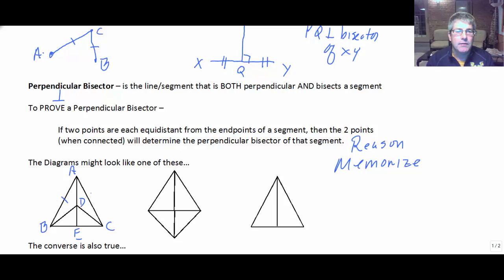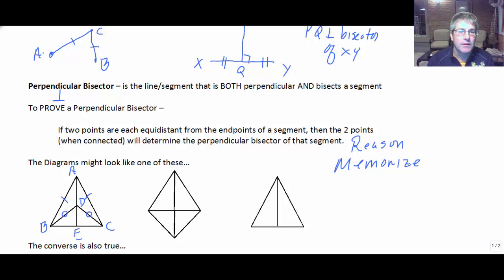For example, if AB is congruent to AC, then A is the same distance from B as it is from C — so A is equidistant from both B and C. And if D is also equidistant from B and C, at a different distance, then A and D are my two points equidistant from the endpoints of segment BC. When A and D are connected through E, line AD forms the perpendicular bisector of BC.